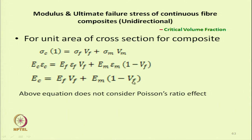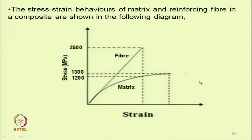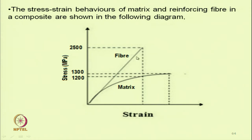In this equation, Poisson's ratio is not considered. Now we will take the example of two situations: one is a composite with a ductile matrix and another is with a brittle matrix. A composite has two major components — matrix and the reinforcing material, which in the case of textile-based composites is a fibre.